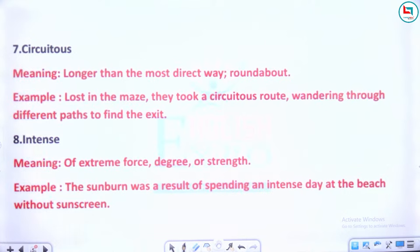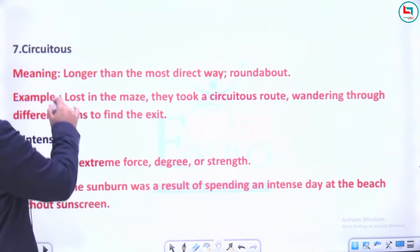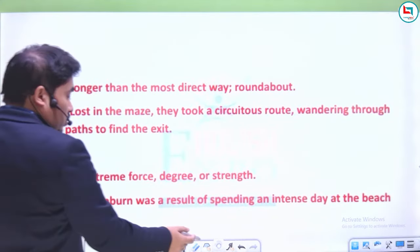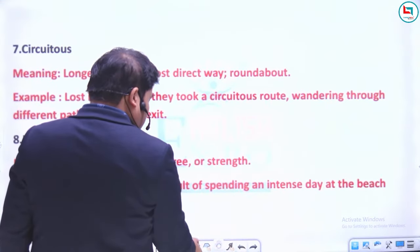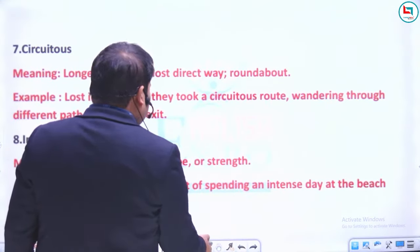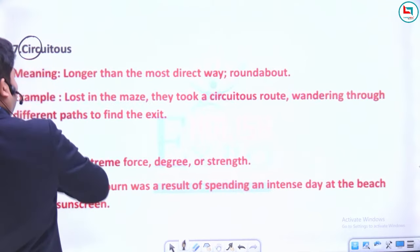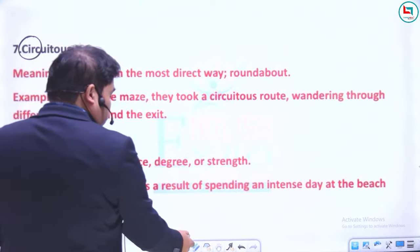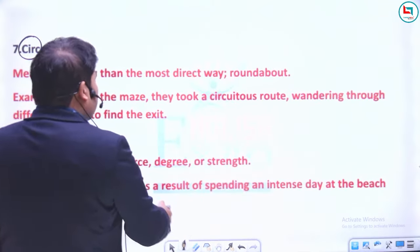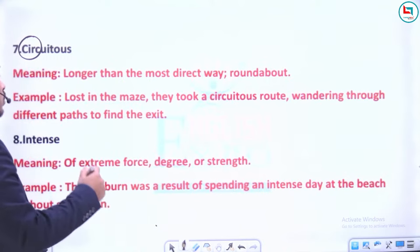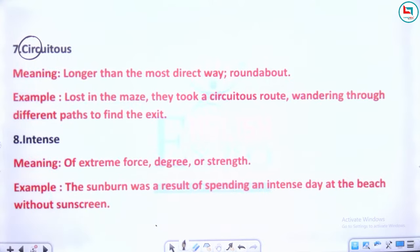Agla shabd hai 'circuitous', meaning: longer than the most direct way, roundabout. Jab aap kisi point par direct nahi aate aur circuitous path leke ja rahe ho, it means longer than the most direct way. Example: Lost in the maze, they took a circuitous route, wandering through different paths to find the exit.